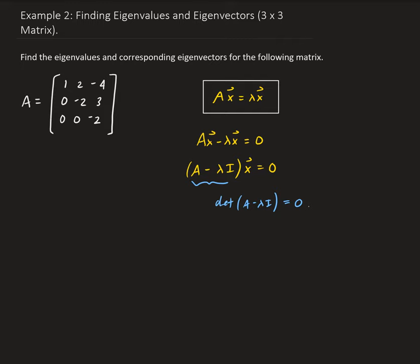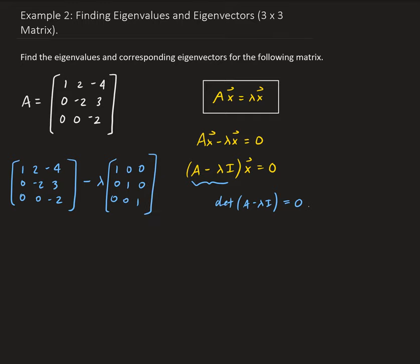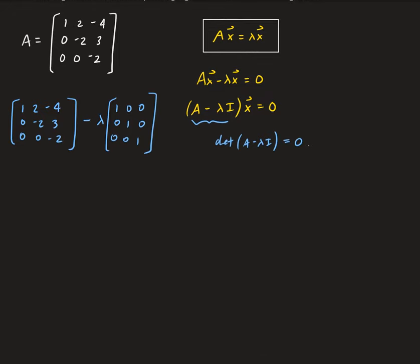Let's go ahead and set this up. We have our matrix with entries 1, 2, negative 4 in the first row, and we subtract lambda times I₃ since this is a 3 by 3 matrix. This gives us the matrix with entries: 1 minus lambda, 2, negative 4 in the first row; 0, negative 2 minus lambda, 3 in the second row; and 0, 0, negative 2 minus lambda in the third row.